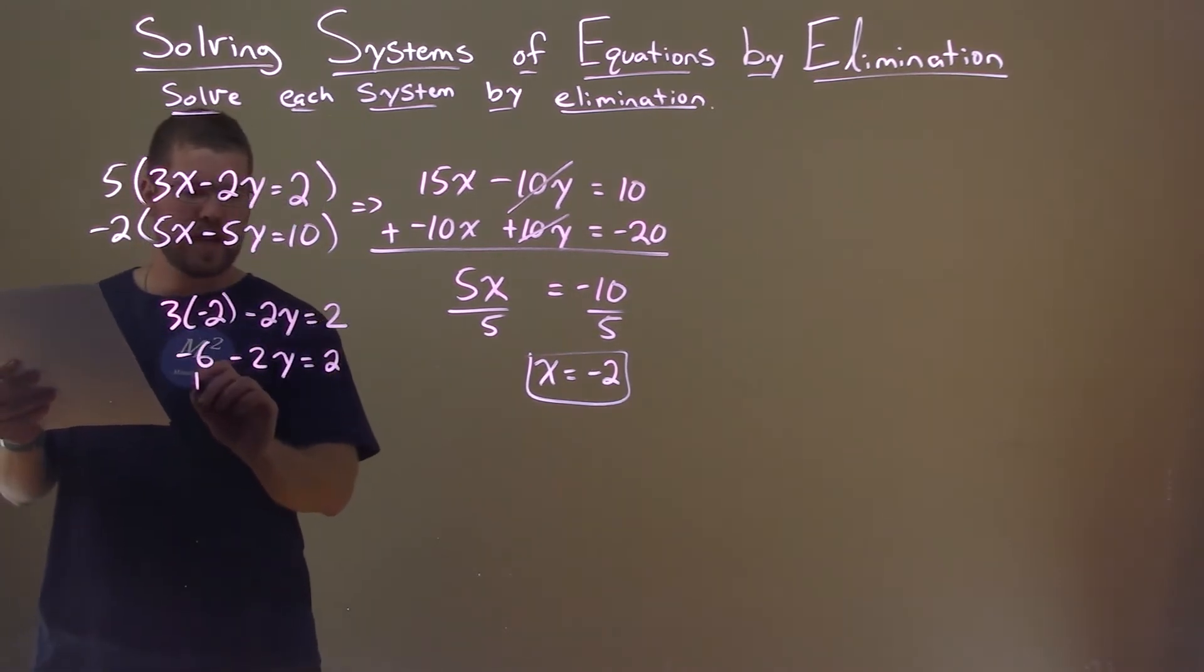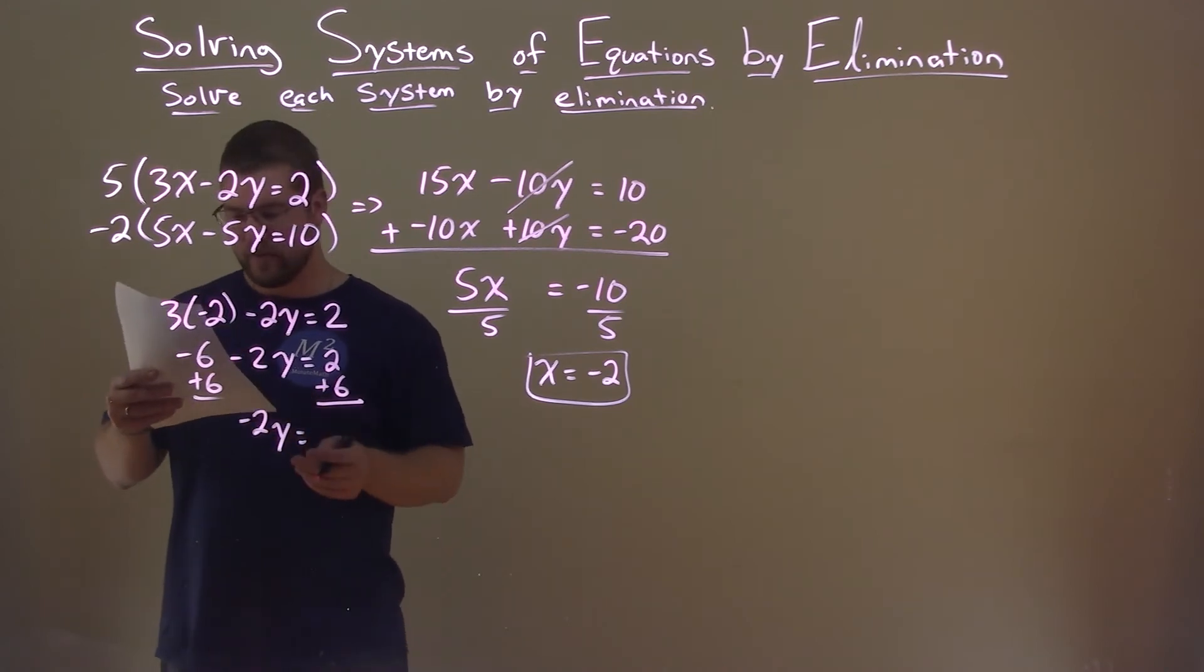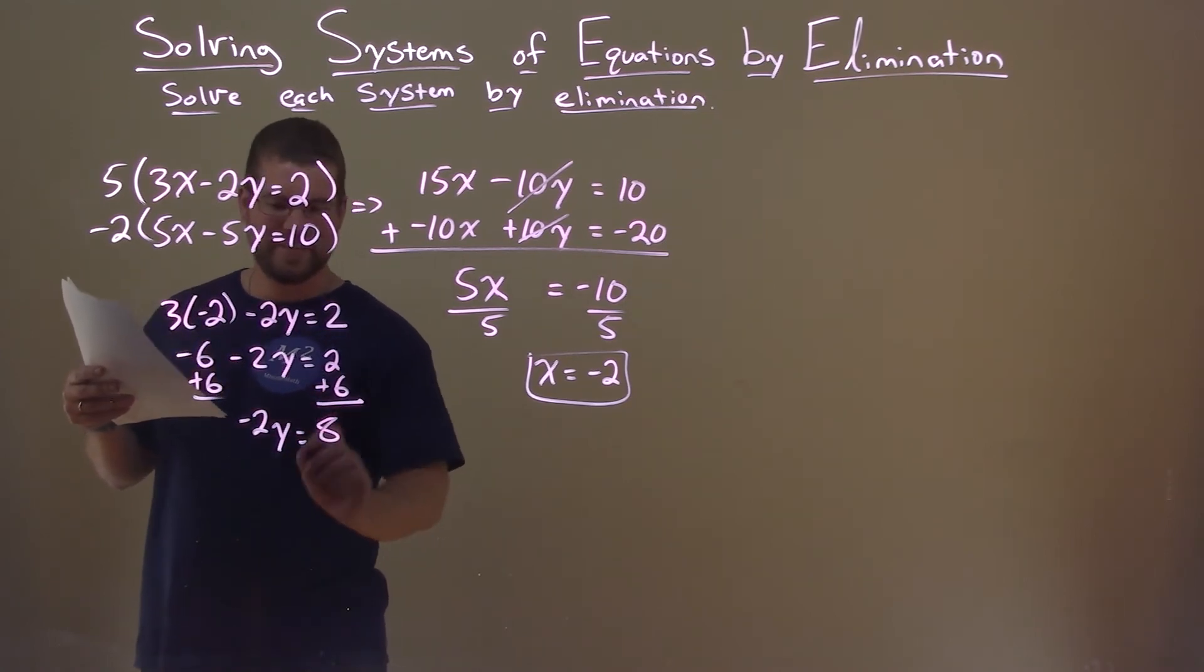We add 6 to both sides. Negative 2y equals 2 plus 6. 2 plus 6 is 8.